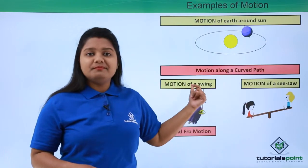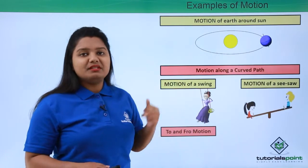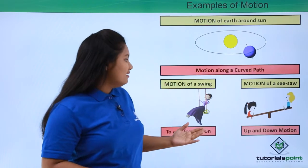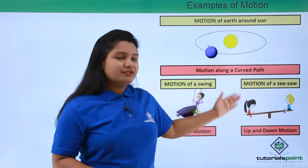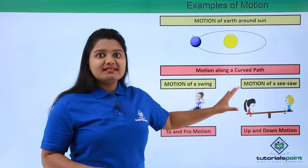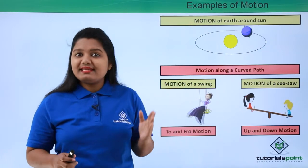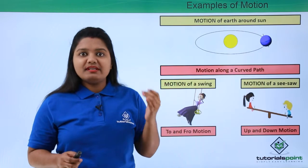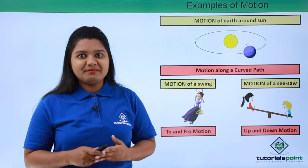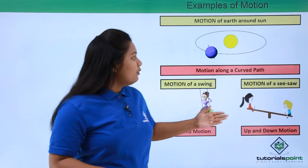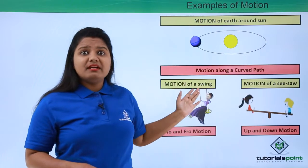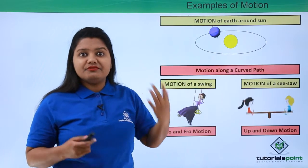Similarly, the motion of a seesaw when children are playing on it is something different. It is something like up and down motion. Now this motion is also considered to be a periodic motion since it repeats itself after a certain period of time. Now in everyday life we come across different bodies making different kinds of motion.